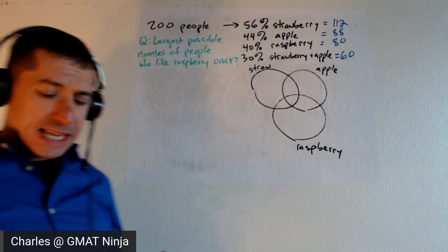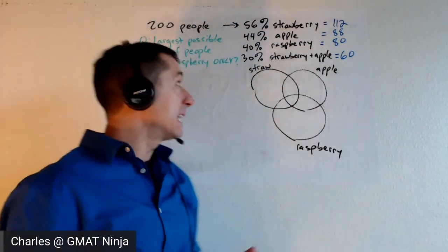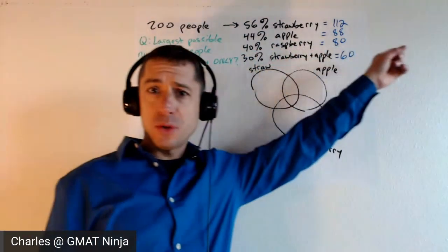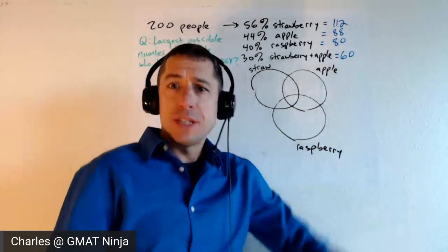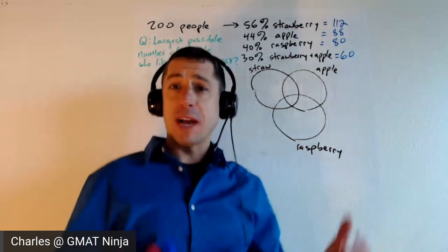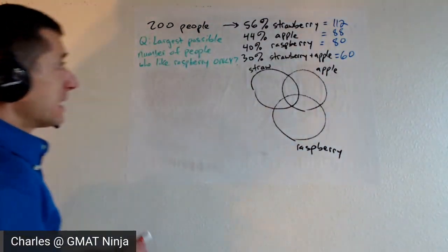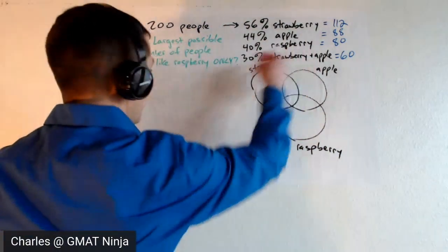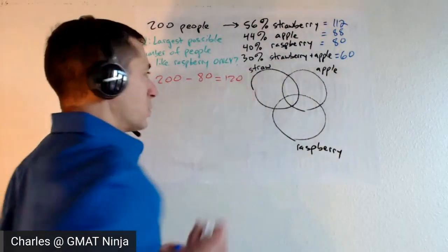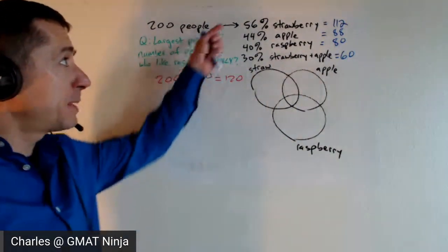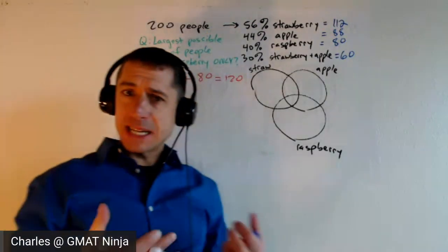So first question I get here for most people is, well, why isn't it just 80? Why isn't it possible that we have 80 people who like raspberry only? We've got 80 people that like raspberry. Why couldn't it be the case that all of them just like raspberry and don't like the other two? Well, let's think through that. We've got 200 people. So if we subtract out that 80, we're left with 120 people that are all of the people that like strawberry and apple. So let's think about, is that even possible?